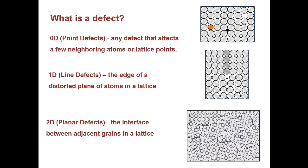First off, what is a defect? Over here to the right, you can see we have a section of lattice. A lattice is a periodic arrangement of atoms, and a defect is defined as anything that disturbs the order of the lattice. So here you can see this orange atom doesn't fit in with the rest of the lattice, which makes it a defect. In order to characterize these defects, we have three different types.